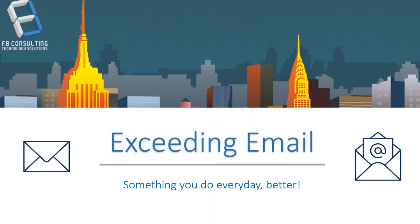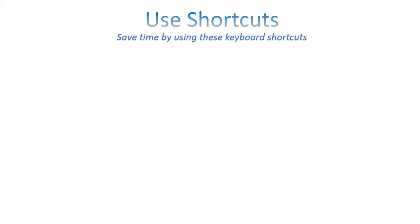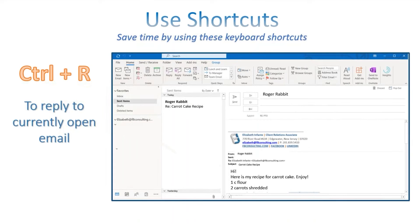Now we want to talk about sending email better — something you do every day. The first thing you can do is use keyboard shortcuts to save time. These are super basic beginner-level shortcuts. Control+R will reply to a currently open email, so when you get that email from Roger Rabbit with his famous carrot cake recipe, you can hit Control+R and thank him for that recipe.